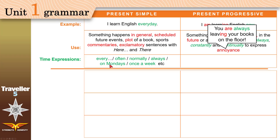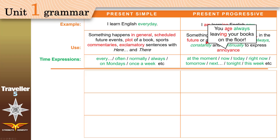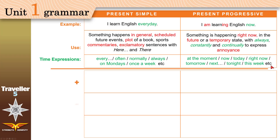Now, time expressions. We use adverbs of frequency — always, sometimes, usually, seldom, rarely, never — with present simple, except when expressing annoyance, where you can use 'always' with present progressive. You can also use 'on Mondays,' meaning every Monday, once a week, once a month, with present simple. With present progressive, use: at the moment, now, today, right now, tomorrow, next month, tonight, this week.